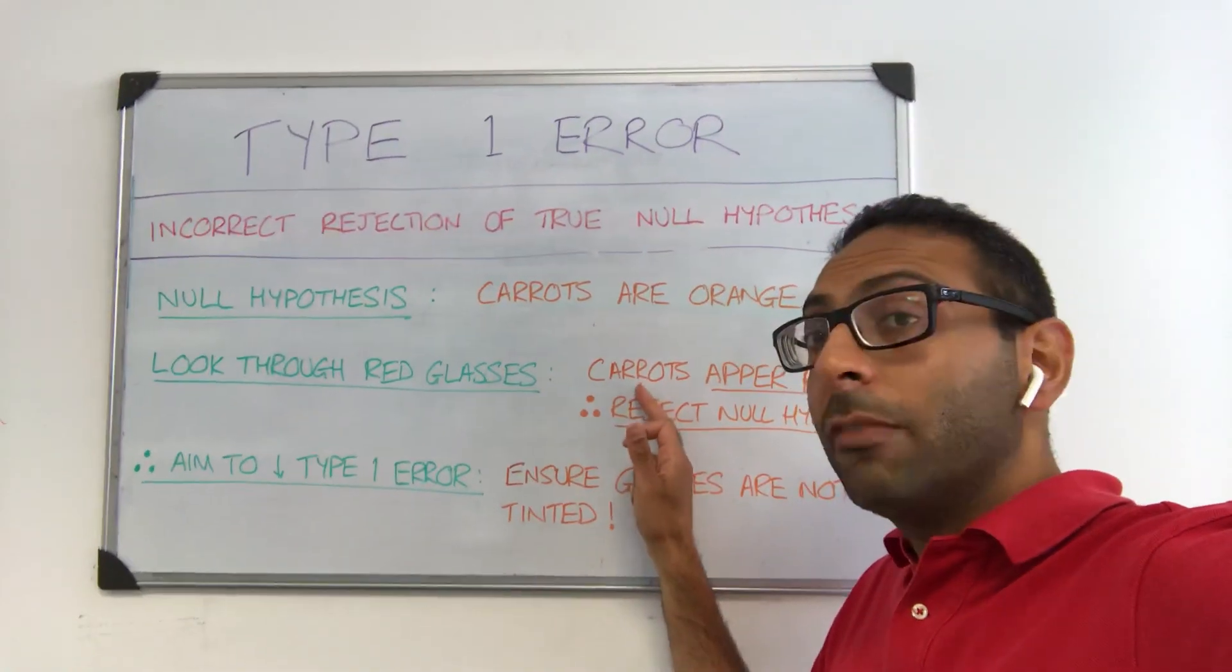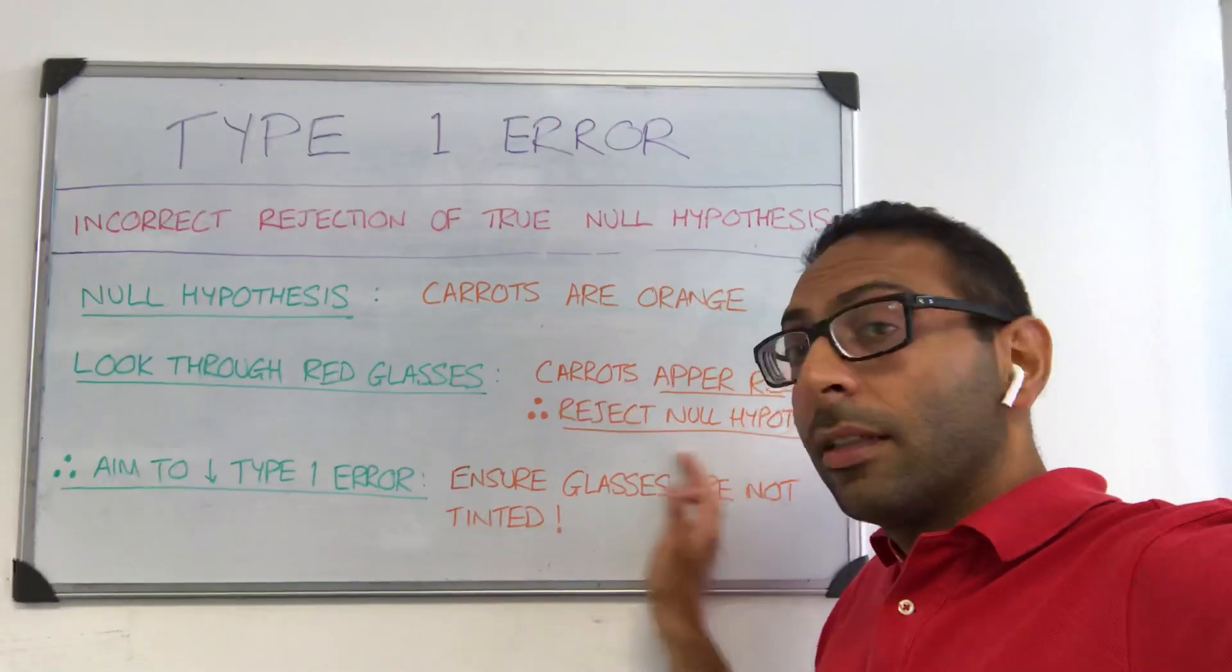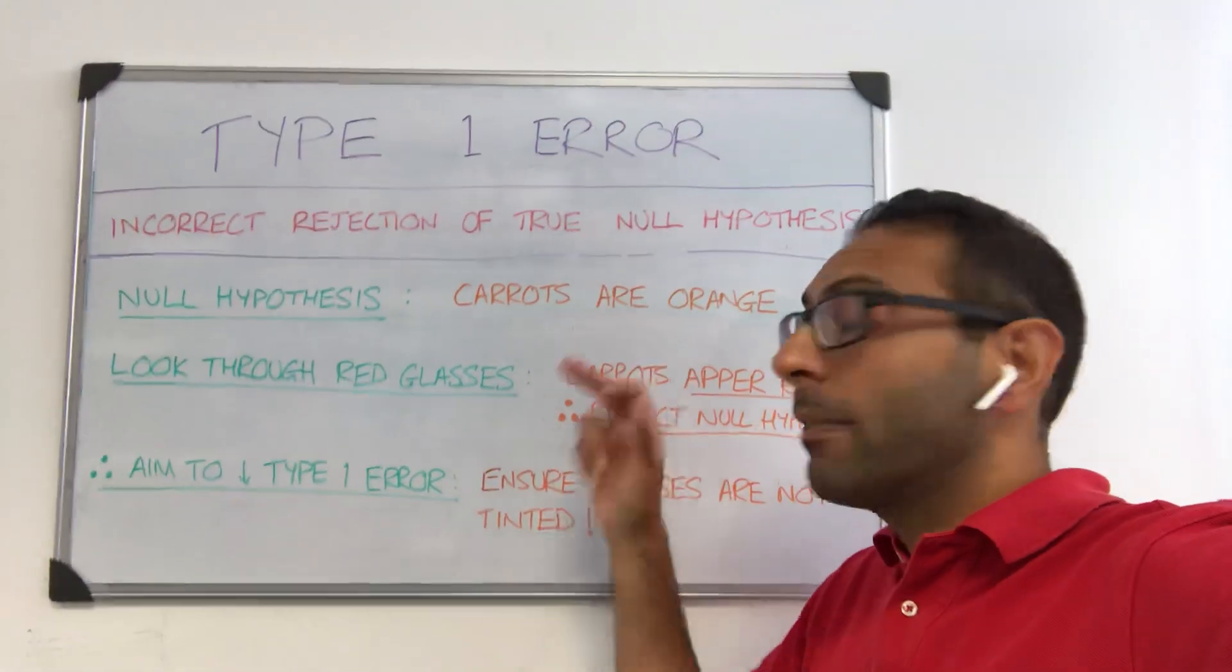Of course, the carrots to them are going to appear red, so they're going to reject the null hypothesis. They're going to say, look, they're not orange, they're actually red.